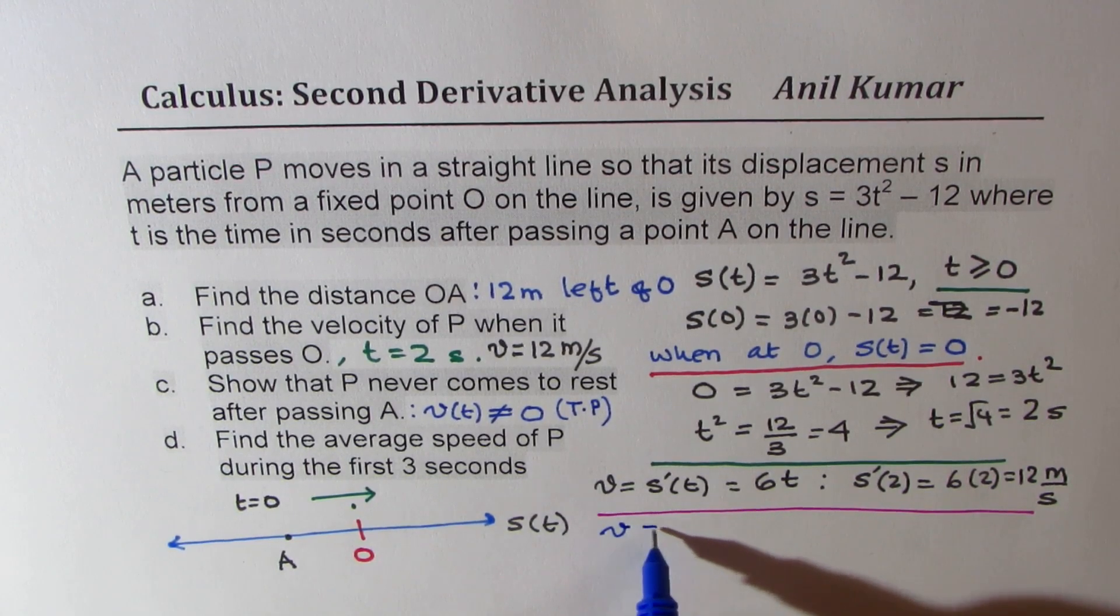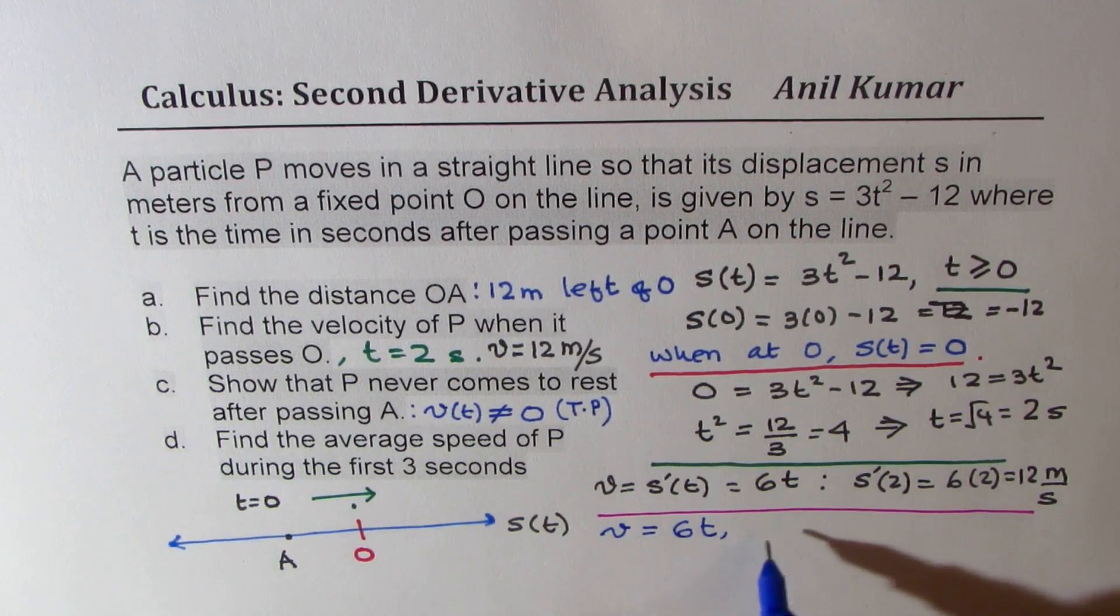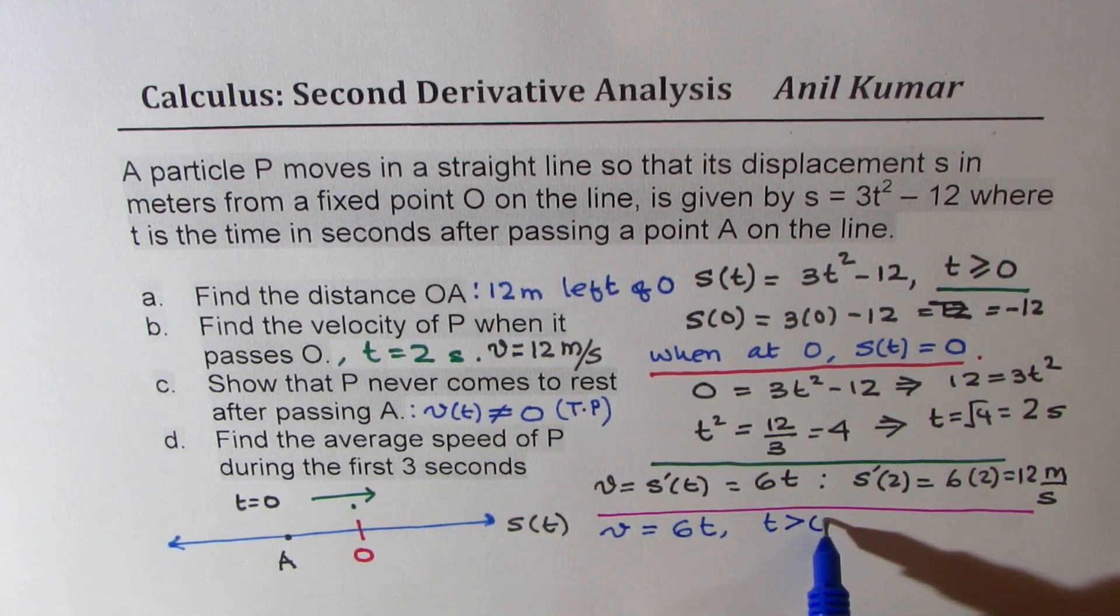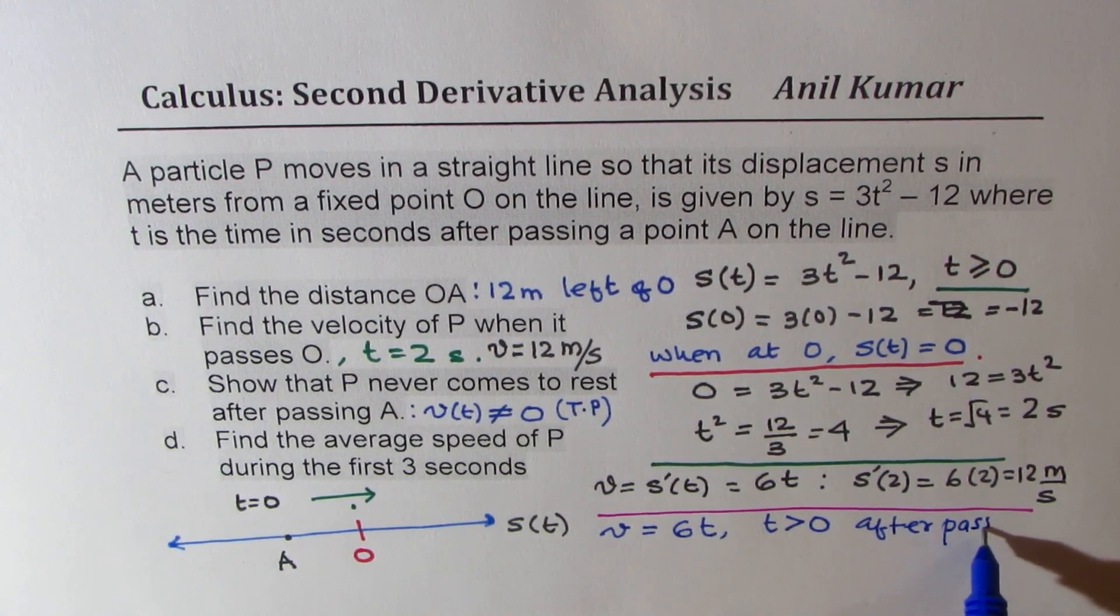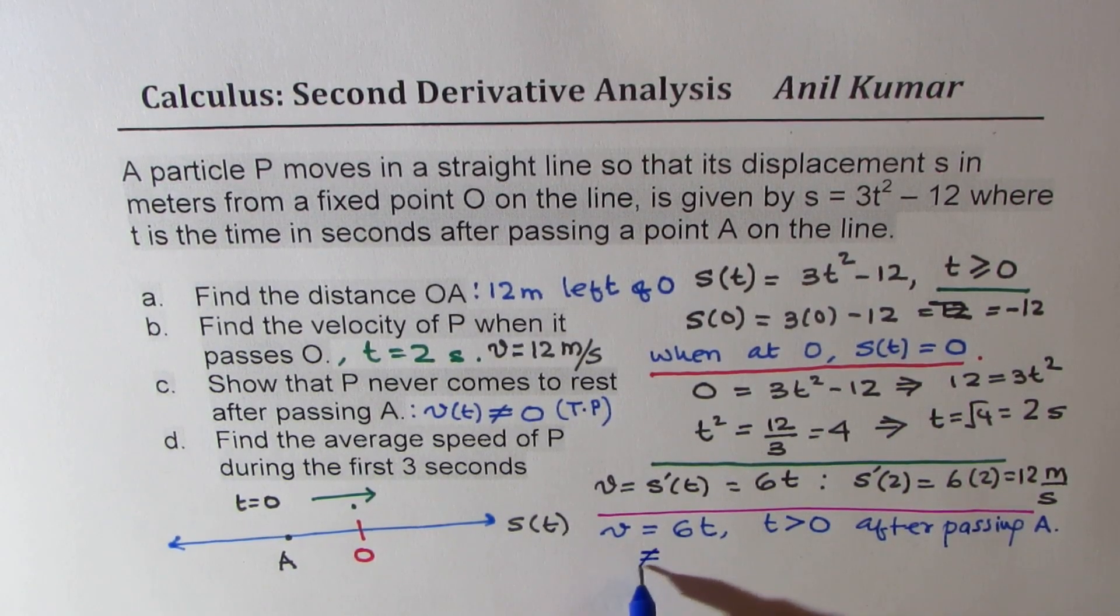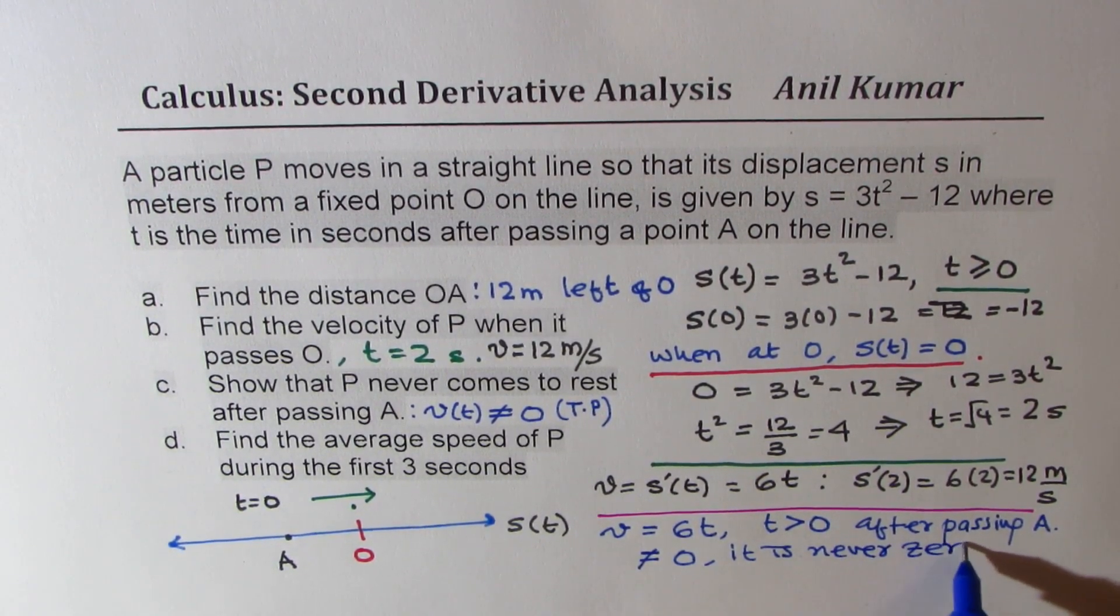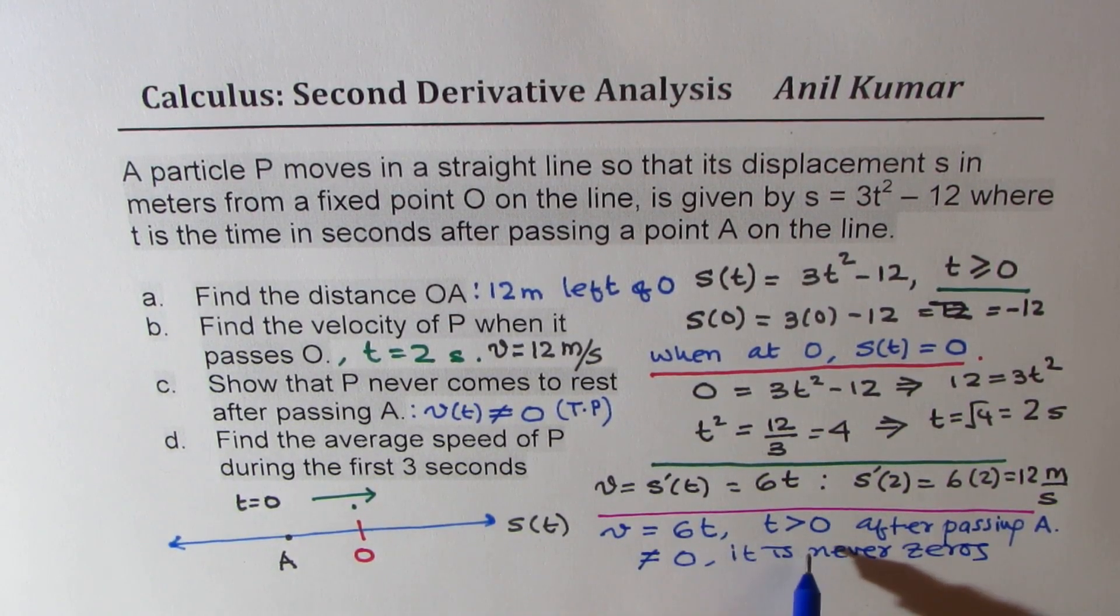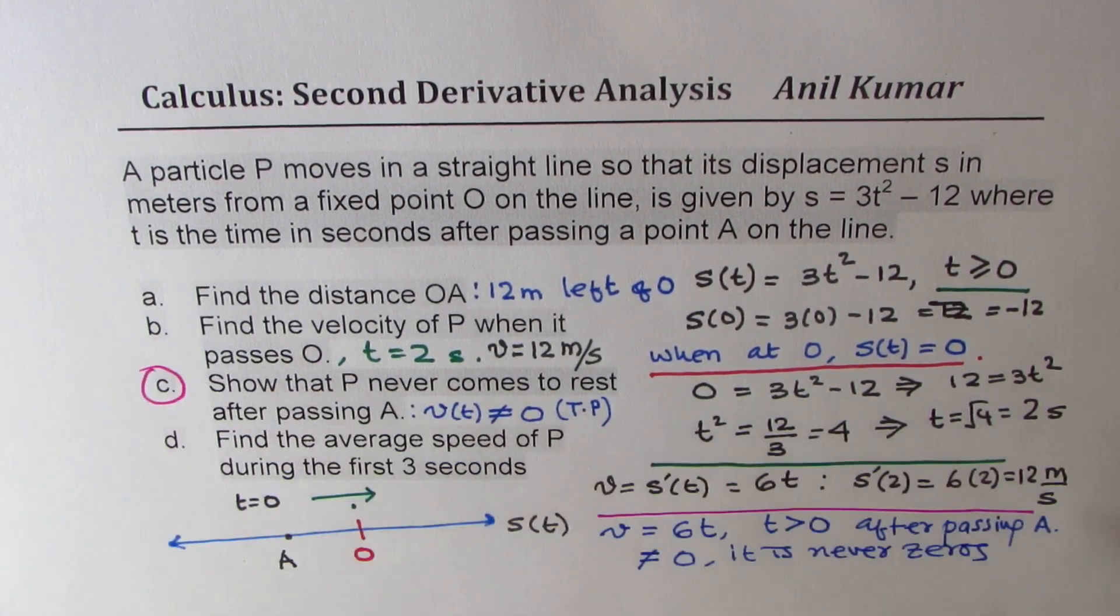And after passing A, T is actually greater than zero. After passing A. So that means it is never equal to zero. So it is never zero. Do you understand now? For velocity to be zero, T should be zero. But T is greater than zero and therefore it is never zero. So that is how we could answer part C.